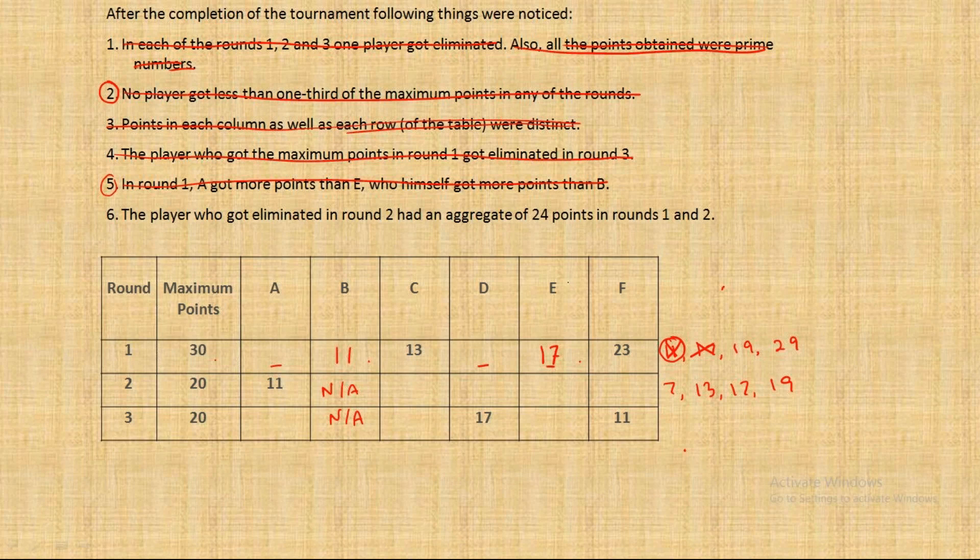Now just imagine in round three you can see already two numbers written, 17 and 11. So how can D be eliminated in round three? D definitely did not get eliminated in round three, that implies that it has to be A who gets 29 points and D got 19 points. Round one is complete.